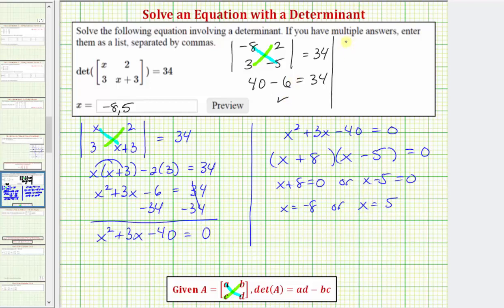Let's also check x equals 5. If x equals 5, the first row would be 5 and 2, and the second row would be 3 and 5 plus 3 which is 8. We have 5 times 8 minus 2 times 3. 5 times 8 is 40, minus 2 times 3 is 6. 40 minus 6 does equal 34. This verifies our two solutions are correct. I hope you found this helpful.